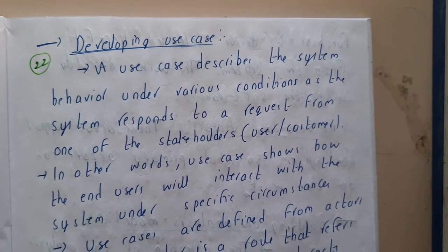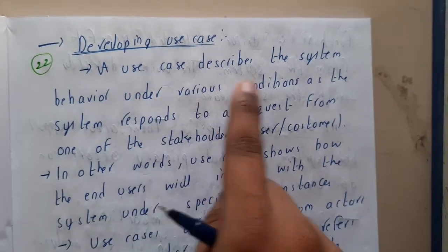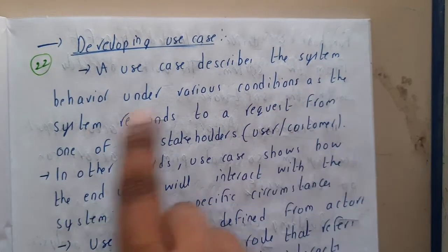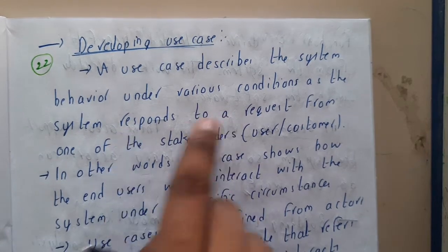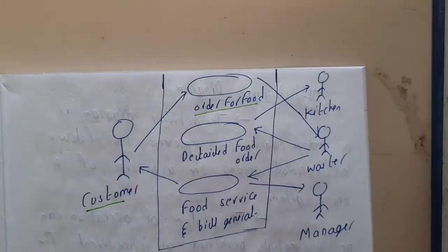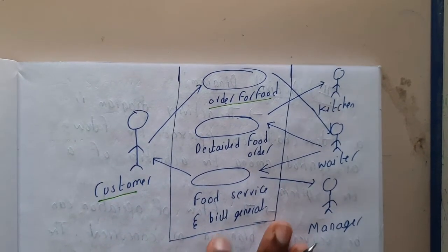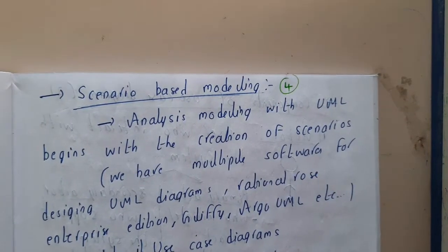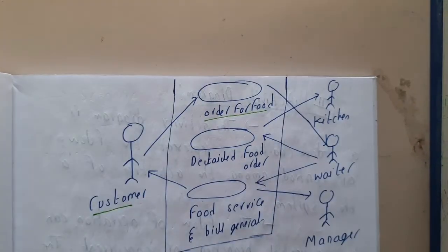Here we will just go through some introduction. A use case describes the system behavior under various conditions as the system responds to a request. This is a use case diagram — we have discussed this already, and in unit 3 when we discuss the scenario-based model, we will cover use case diagrams in detail.